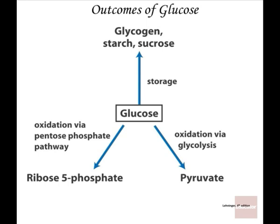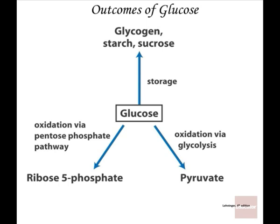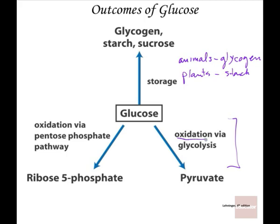To summarize: glucose can get stored — in animals it's stored as glycogen, and in plants it's stored as starch. Glucose can also be oxidized or broken down into pyruvate, or glucose can be oxidized via the pentose phosphate pathway. It's important to get a clear sense about terminology: catabolism is just another word for oxidation.